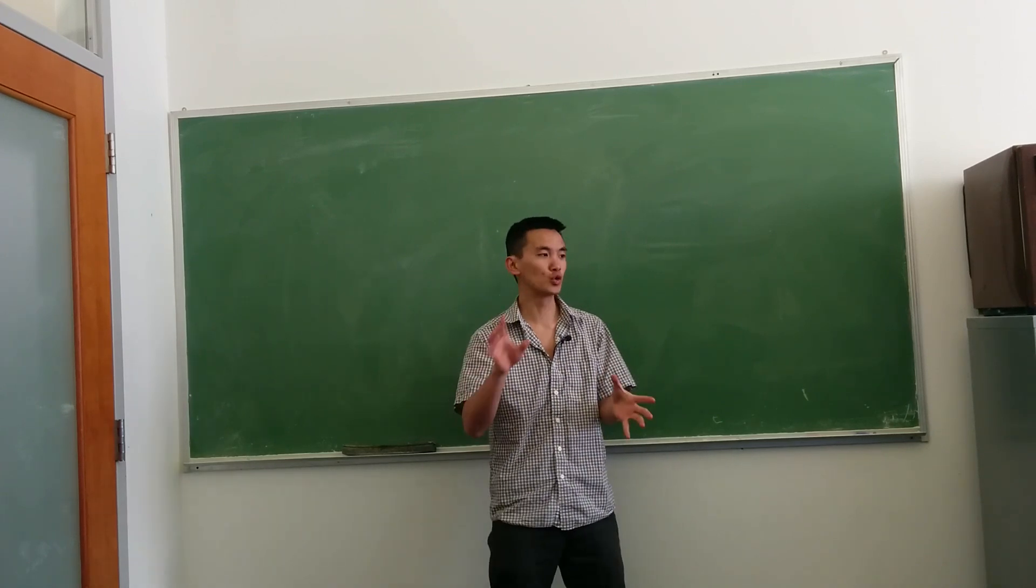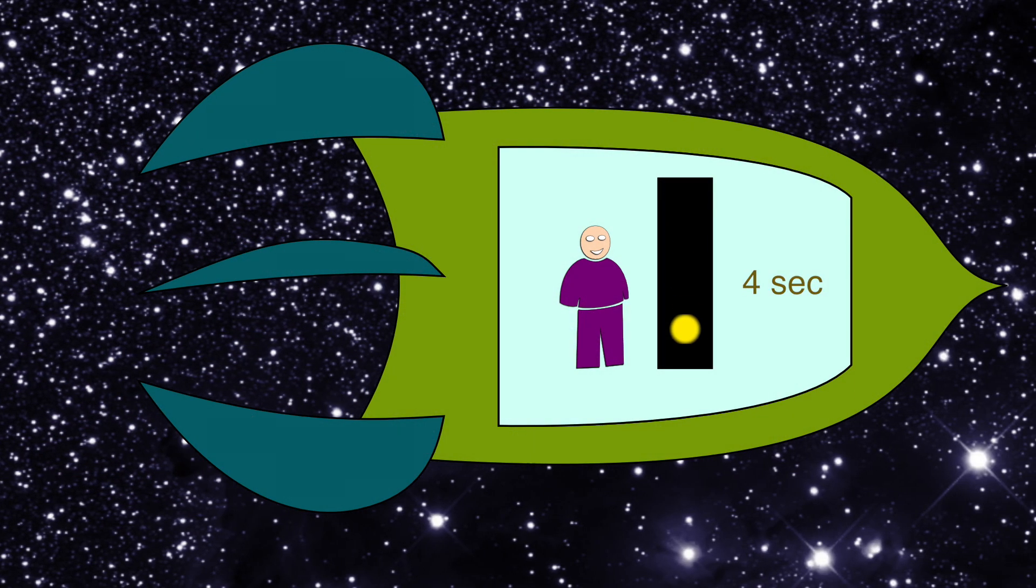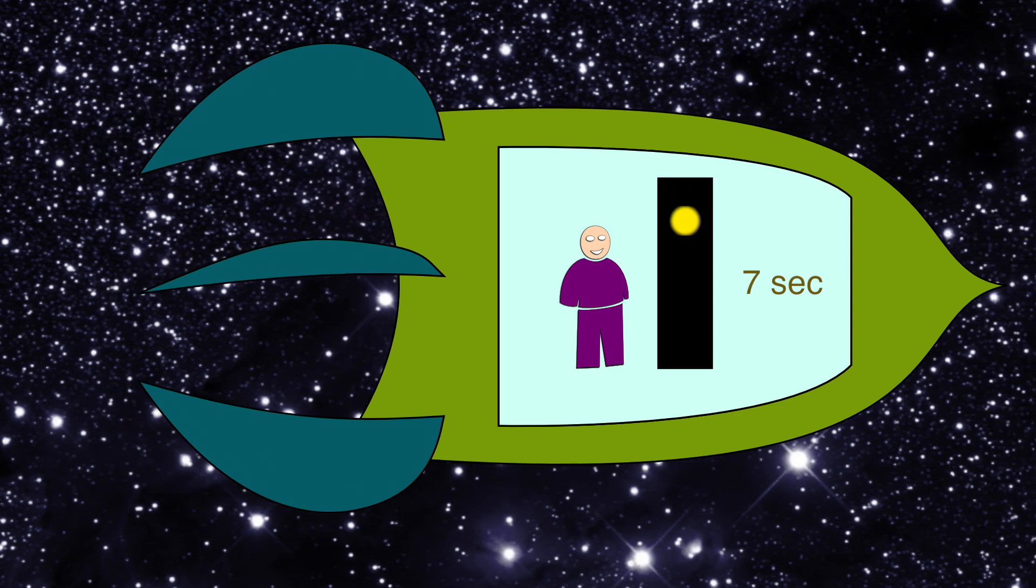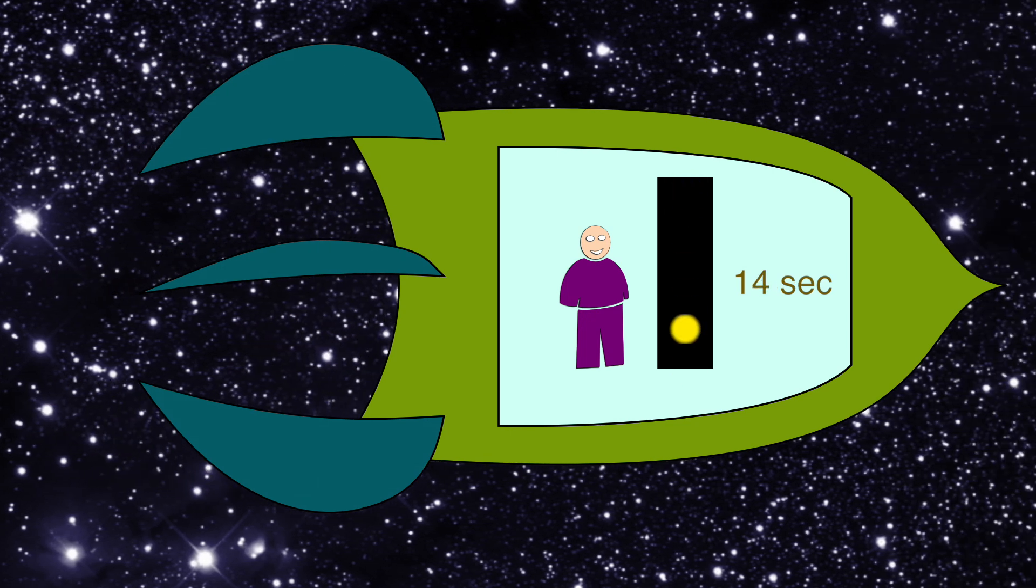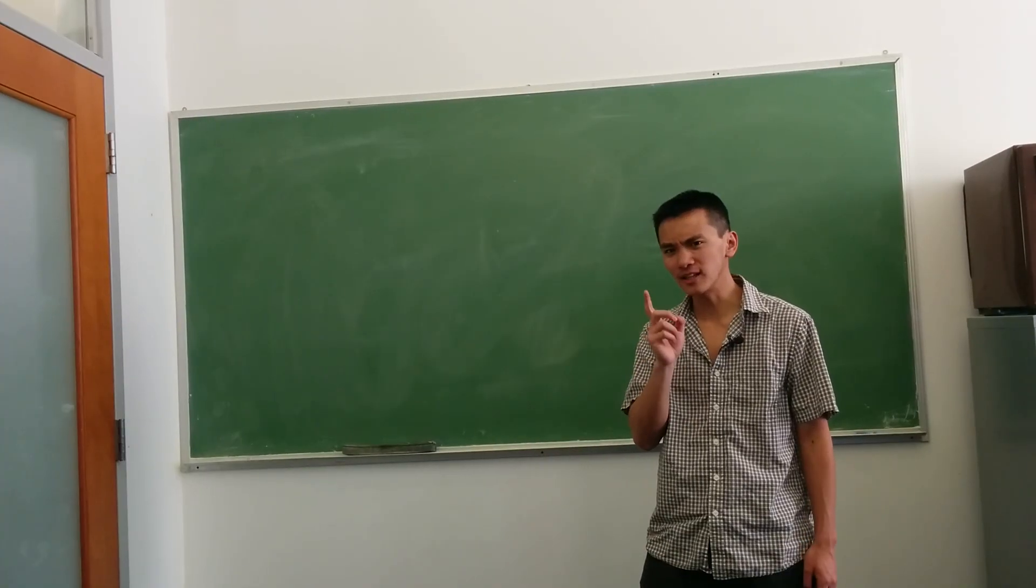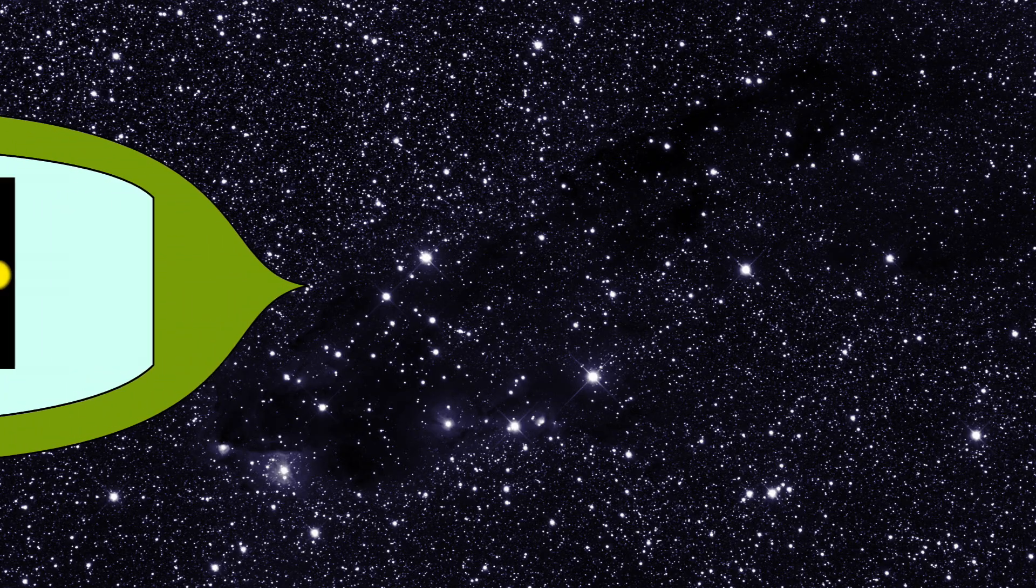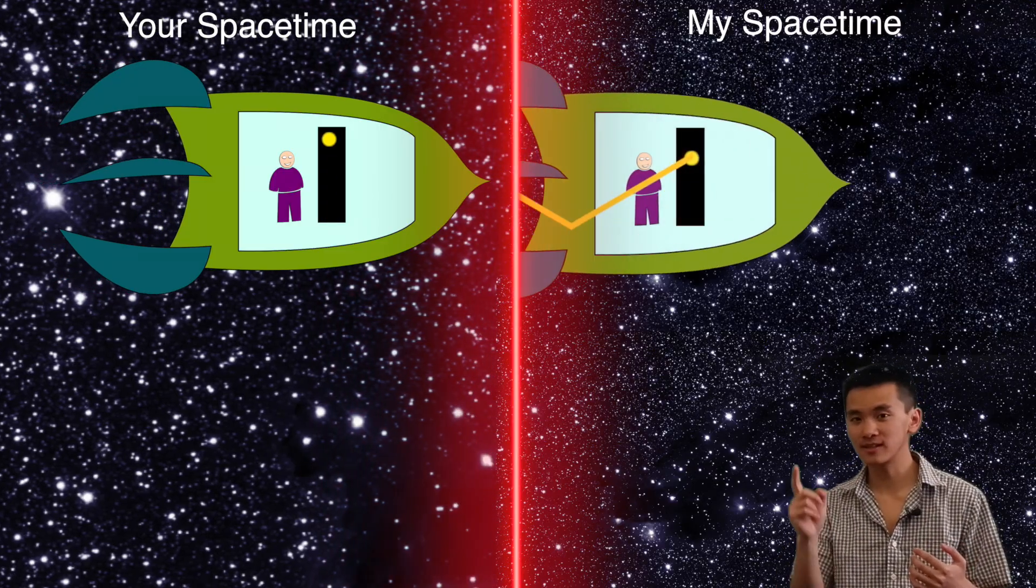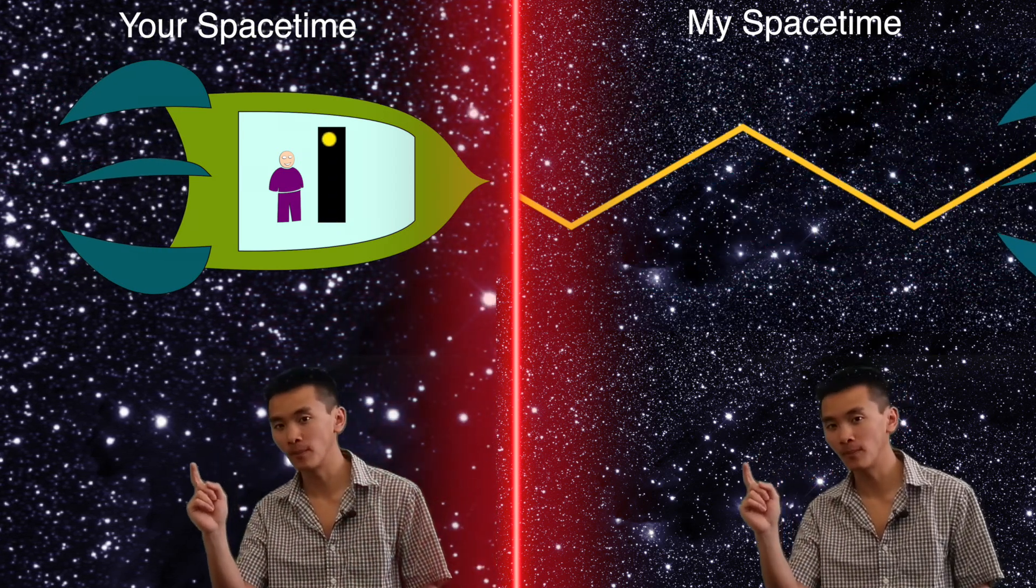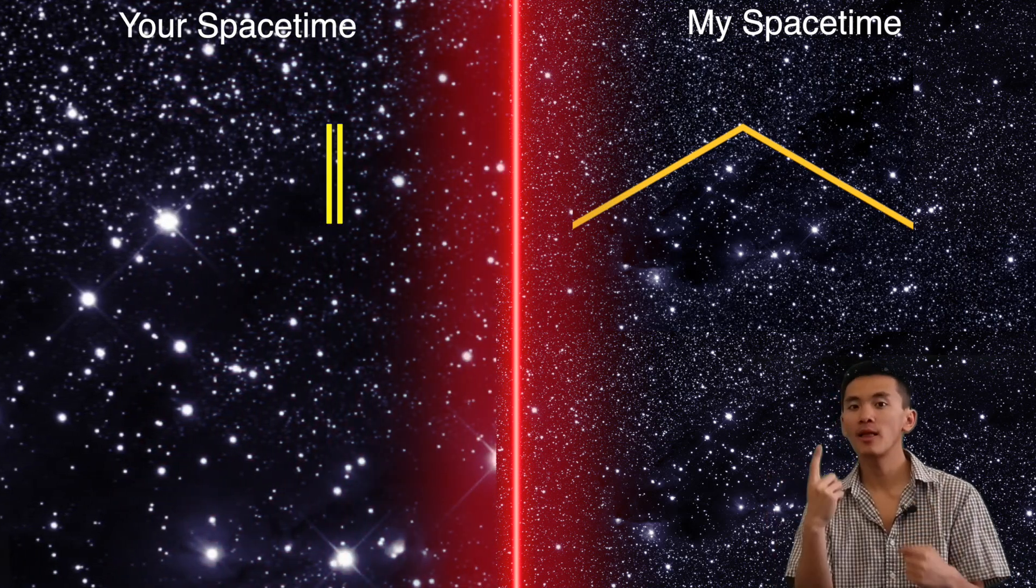This means that whatever measurements you do in your space-time may be totally different from the measurements that I make in my space-time. Suppose that you're measuring time in your rocket by using a beam of light that goes up and down. Let's say it has a distance of one light second to travel from down to up. This means that it will take one second to go from down to up and two seconds to come back down. Now, the thing is that in my space-time, the rocket is moving as light is moving as well. So the trajectory of the beam of light in my space-time is diagonal. This means that the distance light has traveled between going down to up and then down again is going to be bigger in my space-time than in yours.